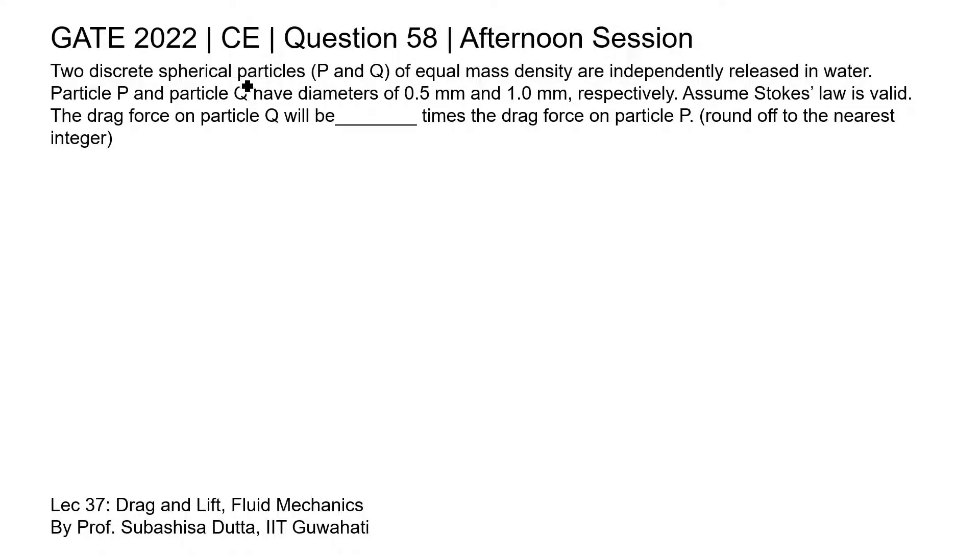So in this question, two discrete spherical particles P and Q of equal mass density are independently released in water, that is the fluid is same for both particles and that is water. Now the diameters of particle P and Q are given as 0.5 mm and 1 mm respectively. Considering Stokes law, we need to comment on the relation between the drag force on particle Q and drag force on particle P.